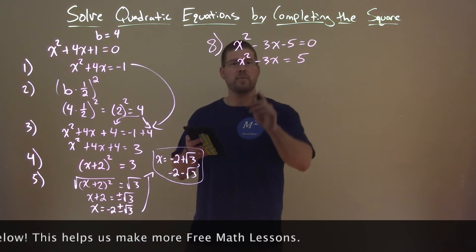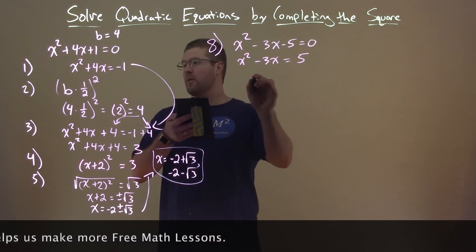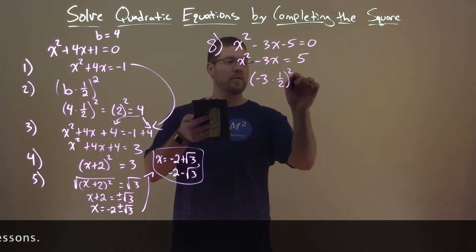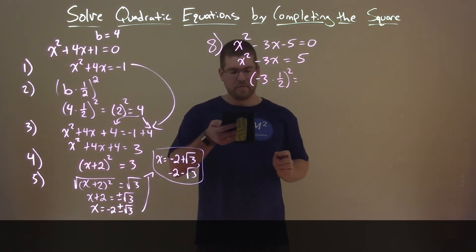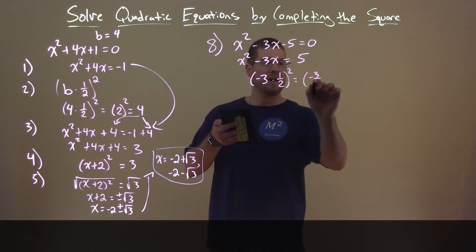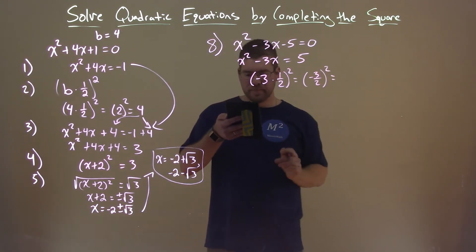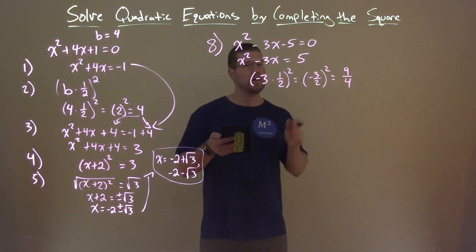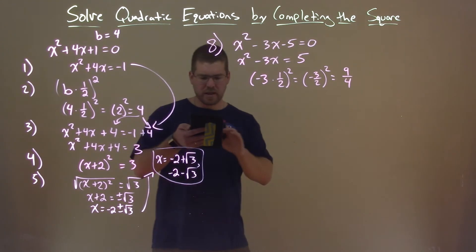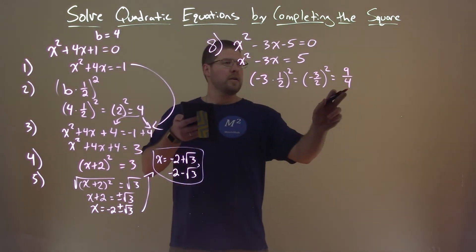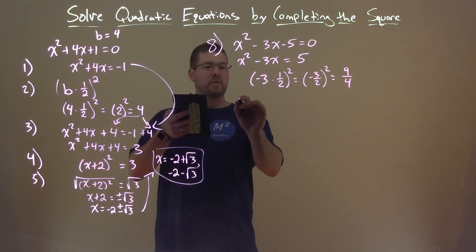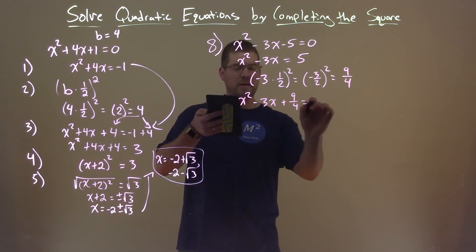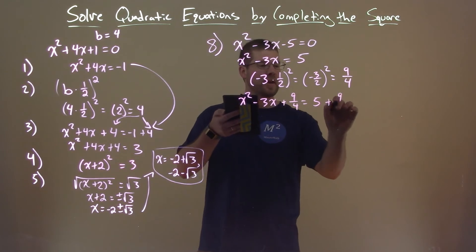From there we take our b value — our b value of negative 3 — multiply it by one half and square that. Negative 3 times one half is negative 3 halves; squaring that gives us positive 9 fourths. That's a little tricky. We plug that in and 9 fourths gets added to both sides, so we have x squared minus 3x plus 9 fourths equals 5 plus 9 fourths.